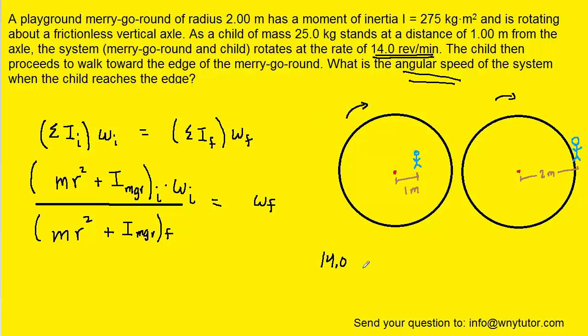We can write 14 revolutions over one minute. We do know of course that one revolution is equivalent to two pi radians, and this way the revolutions will cancel out. And of course we also know one minute is equivalent to 60 seconds, and so the minutes will cancel. Let's pick up our calculators and compute this to see what the initial angular velocity is. It turns out to be approximately 1.466 radians per second.